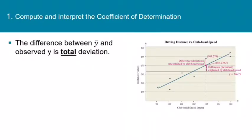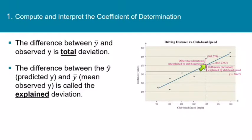Now for any data value, let's just look at an x value of 103, for example. For any x value, the difference between y bar and the actual observed y value is total deviation. And you can see that the deviation is separated into two parts. The difference between y hat, which is the y value predicted by the regression equation, and y bar is explained by changes in clubhead speed.